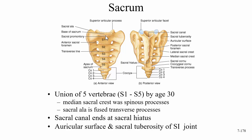We have the sacral promontory — when the sacrum is turned sideways, you can see this promontory sticks out prominently. Here's the base of the sacrum. And the auricular surface is in the shape of an ear — auricle means ear — and this auricular surface hooks up with the auricular surface of the ilium, giving us our sacroiliac joint.